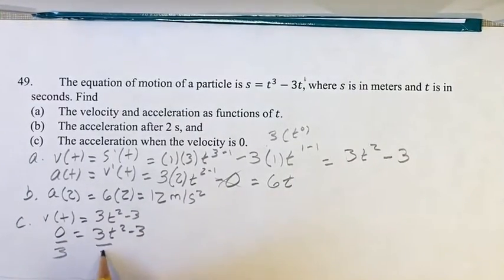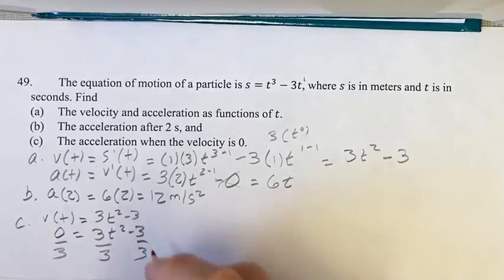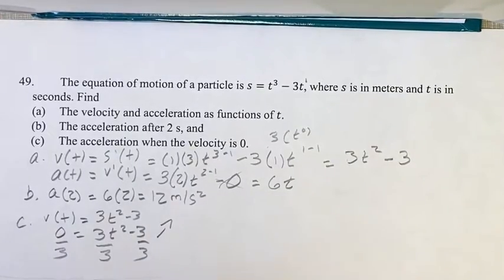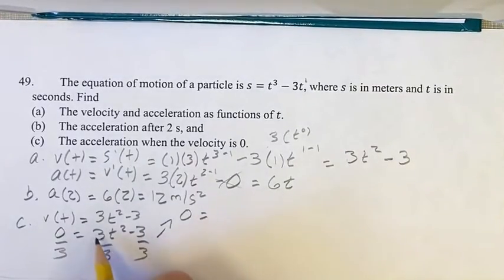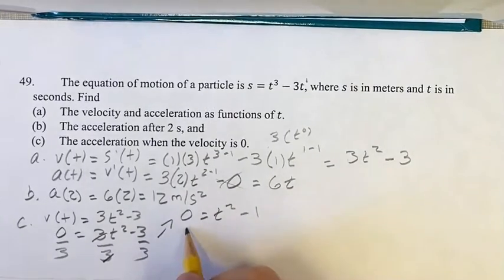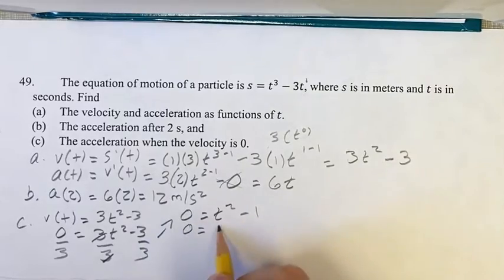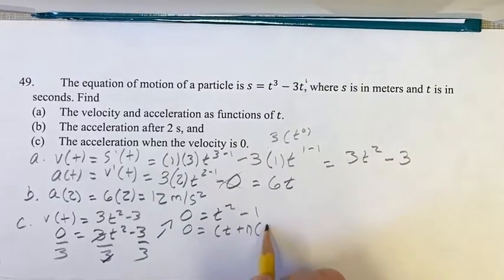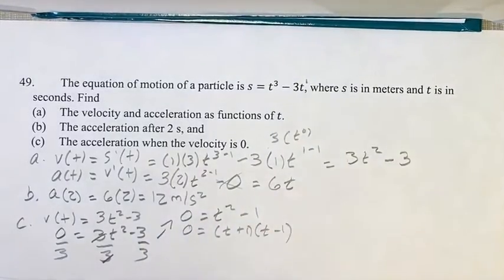We can divide everything in this equation by 3, making this a little bit easier. Rewriting that, we get 0 is equal to t squared minus 1. So 0 is equal to t plus 1 times t minus 1, difference of 2 squares.